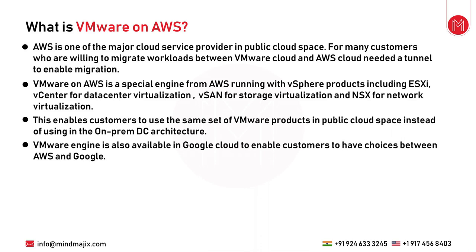Many customers want to migrate workloads between VMware Cloud and AWS. Some want to expand their data centers without extra infrastructure costs. They already have an on-premise VMware-based data center running and don't want a separate public cloud. In those situations, AWS provides a specific infrastructure where customers can run the VMware engine — including vSphere products like VMware ESXi — and get connected.